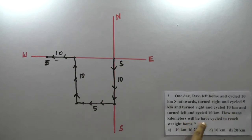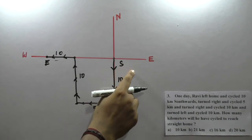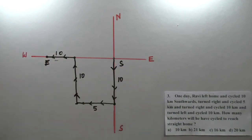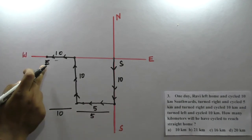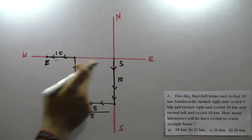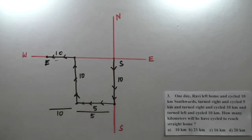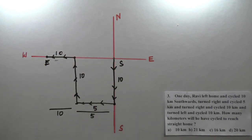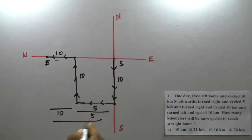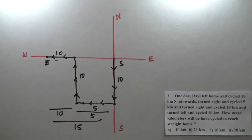How many kilometers will he have cycled to reach straight back home? This is the starting point and this is the ending point. We can see the distance between them is 15 kilometers, so the answer will be 15 kilometers.